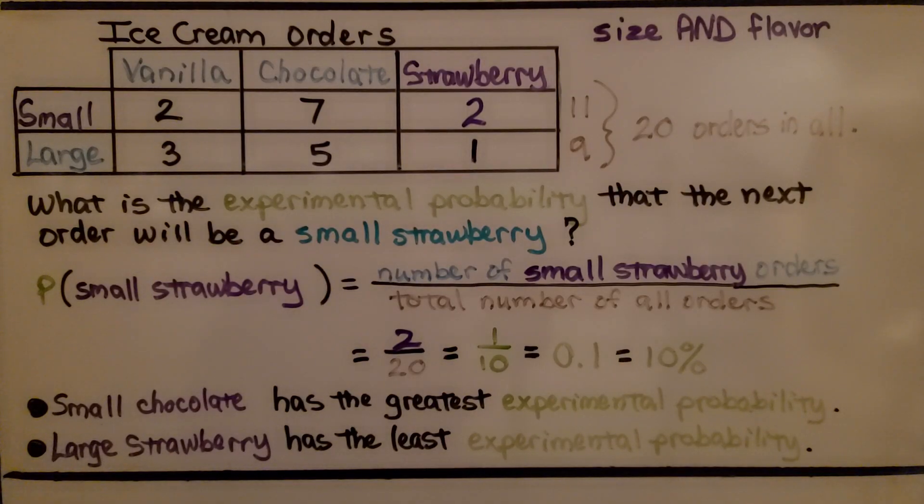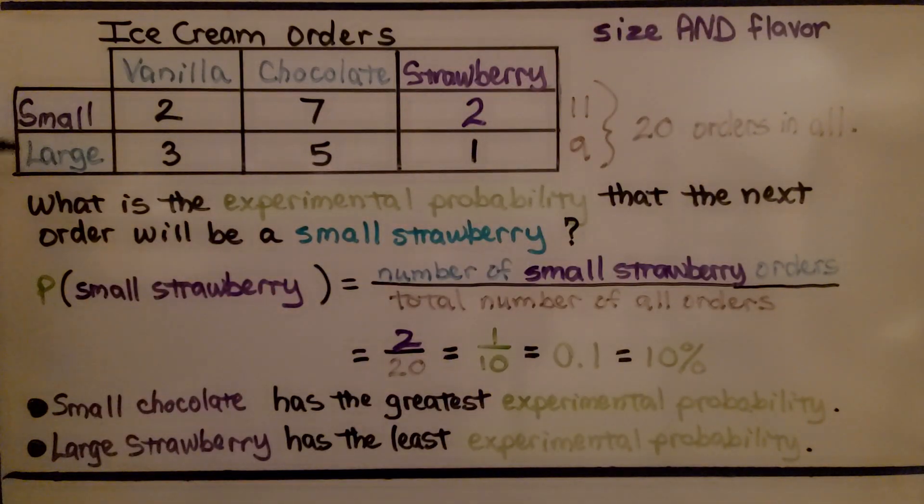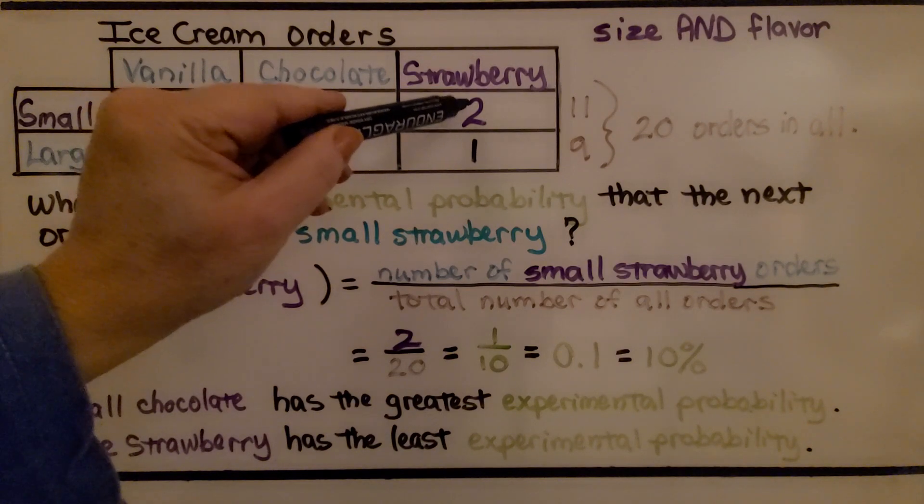Now we have some ice cream orders. The compound event is the size and the flavor. So we have a size and flavor: vanilla, chocolate, or strawberry. What is the experimental probability that the next order will be a small strawberry? We look for small, meaning strawberry, and we see a 2.